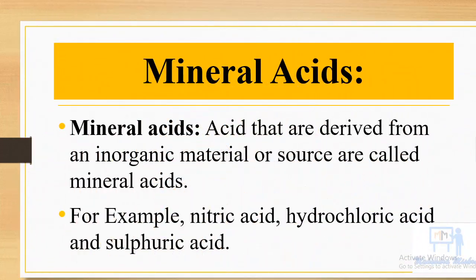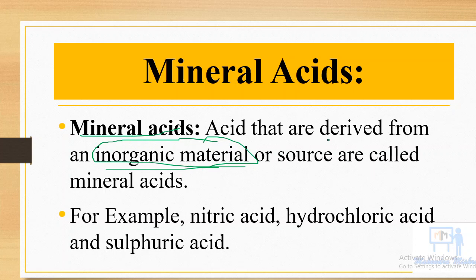The next type is mineral acid. Mineral acids are those acids which are mainly derived from inorganic materials. Inorganic materials are those which contain no carbon element, or very little carbon. Examples of mineral acids are nitric acid (HNO3), hydrochloric acid (HCl), and sulfuric acid (H2SO4).